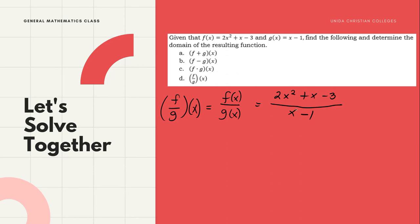In dividing functions, if the given equation is factorable, we factor it so we can cancel common terms. The numerator is factorable — we factor it back into binomials, similar to reversing the FOIL method.